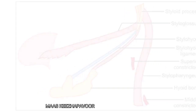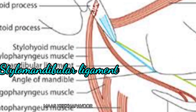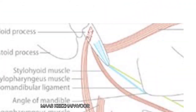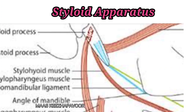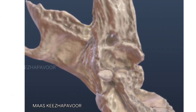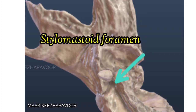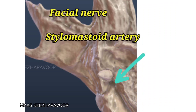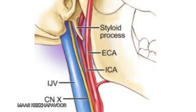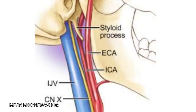The stylohyoid ligament extends from the tip of the styloid process and the stylomandibular ligament from the lateral aspect of the tip. The styloid process and the three muscles and two ligaments attached to it are together called the styloid apparatus. Posterior to the styloid process, between the styloid and mastoid process, is the stylomastoid foramen. The facial nerve comes out of this foramen and the stylomastoid branch of the posterior auricular artery enters it. The styloid process is laterally crossed by the facial nerve at its base and external carotid artery at its tip, and covered by the parotid gland in its upper part. Medially, the styloid process is related to the carotid sheath.